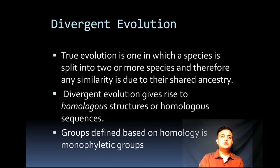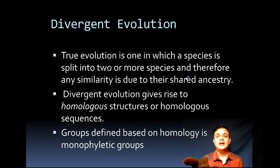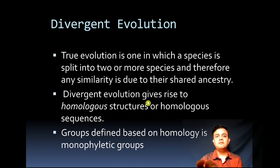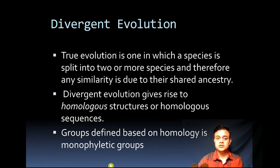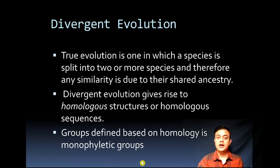True evolution is divergent — the species splits into two or more species, and therefore similarity is due to shared ancestry. Divergent evolution gives rise to homologous structures or homologous sequences. Groups defined based on homology are called monophyletic groups. Monophyletic groups have one common ancestor and all its descendants.